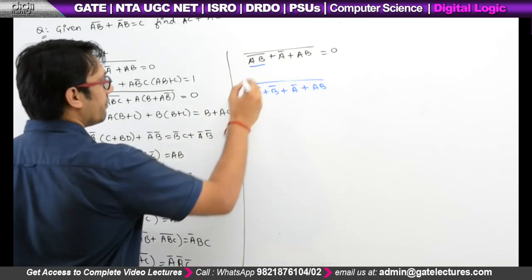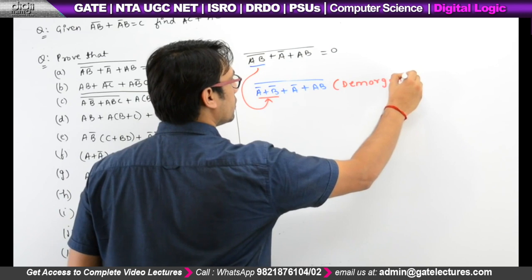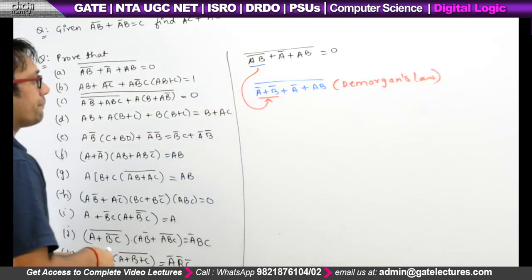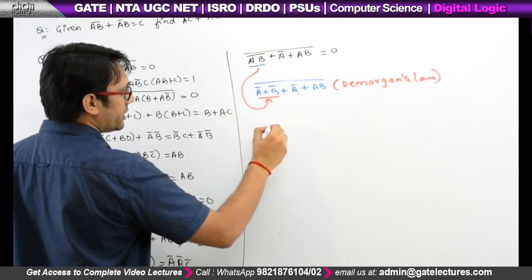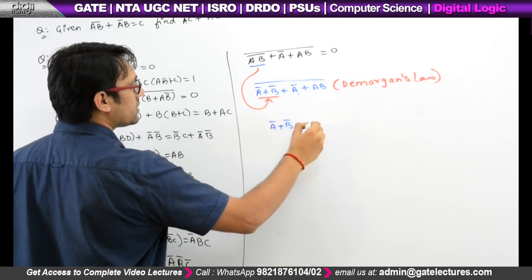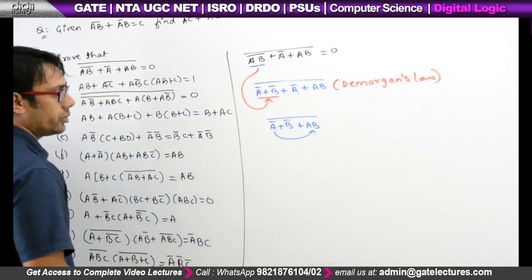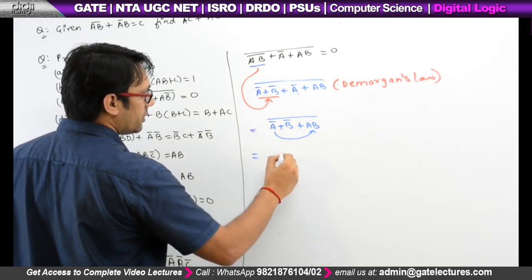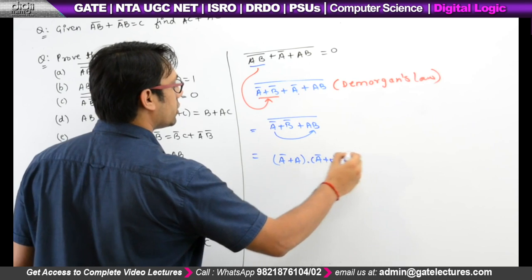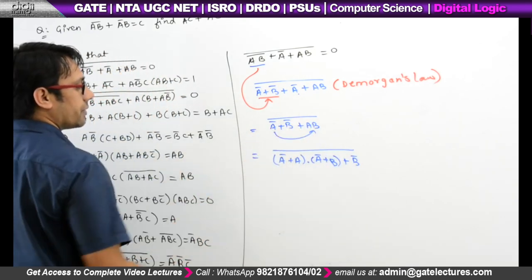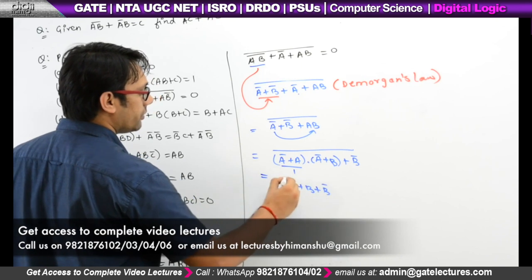We have written this expression using De Morgan's law. Now we can see we have A' and A' — we do not have to write it twice, just write it once. So it can be written as A' + B' + (AB)'. Now you can distribute A' over (AB), so it is A' + A·A' + A'·B + B' whole complement, which can be further simplified. We have distributed A' over AB, so this is 1, giving A' + B + B' whole complement.